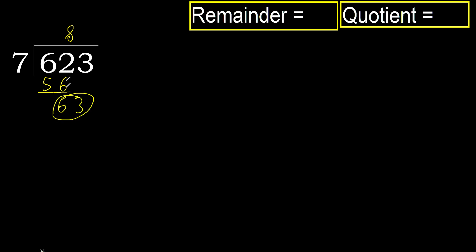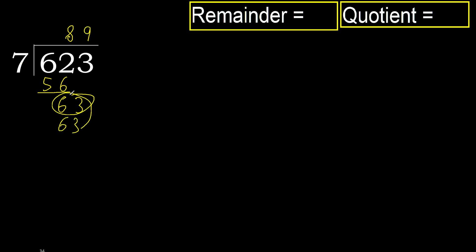Next: 63. 7 multiplied by 9 is 63. 63 is not greater. Subtract: 63 minus 63 is 0.